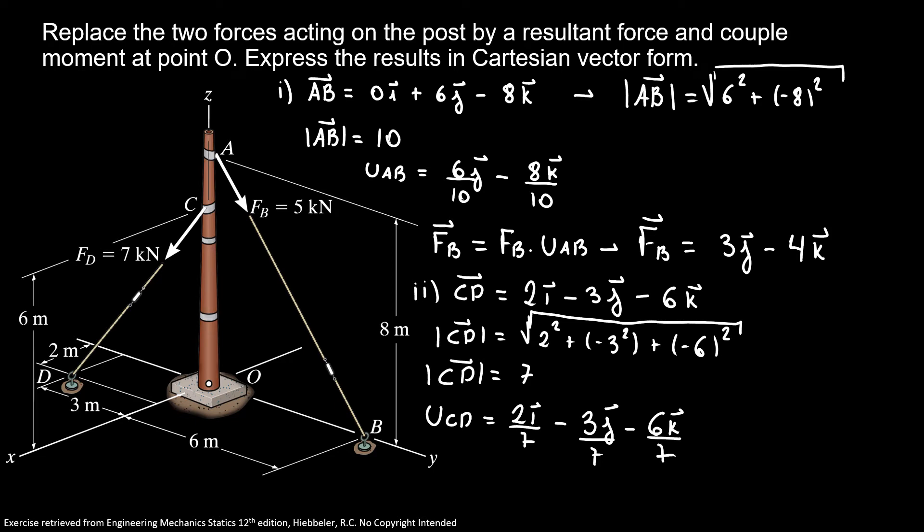My unit vector CD is equal 2i over 7 minus 3j over 7 minus 6k over 7. Following, our force D in vector form is our force D that's 7 times unit vector CD. So our vector form D is equal 2i minus 3j minus 6k.